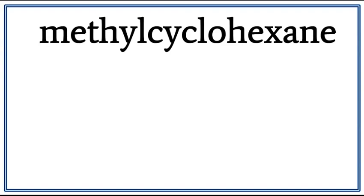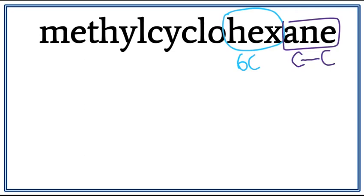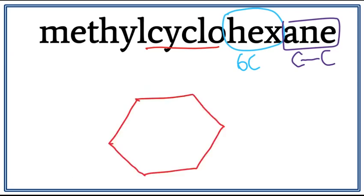Let's draw the structure for methylcyclohexane. 'Hex' tells us that there are six carbons present in the longest carbon chain. 'Ane' tells us that this is an alkane, meaning that there are only single bonds between carbons. We have a cyclohexane, meaning that the longest carbon chain is arranged in a ring. Every time you see the word 'cyclo,' there is always a ring present. We have six carbons arranged in a ring, so we draw a hexagon. This is cyclohexane.